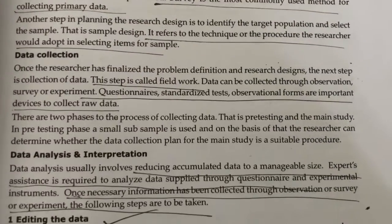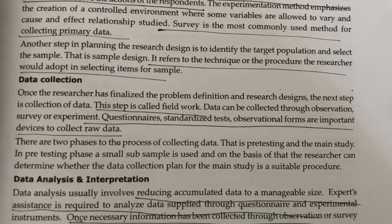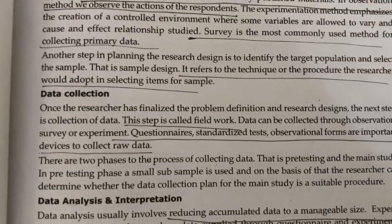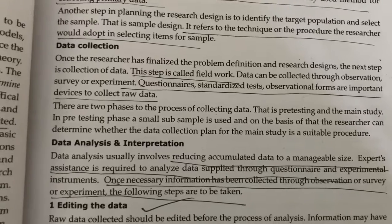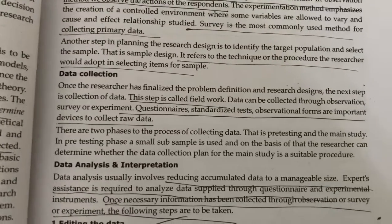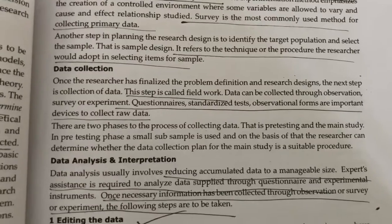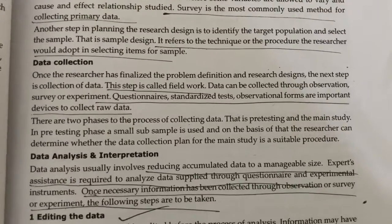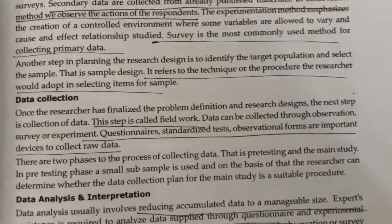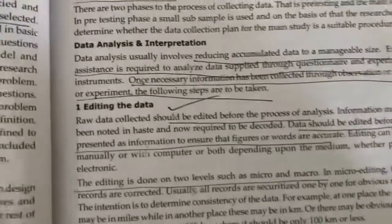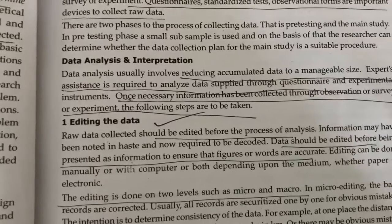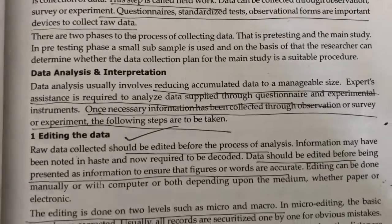There are two phases to the process of collecting data: pre-testing and the main study. The pre-testing is the original preliminary study conducted on a small sub-sample. The researcher can determine whether the data collection plan for the main study is suitable. This pre-testing is also called a pilot survey or pre-study survey.